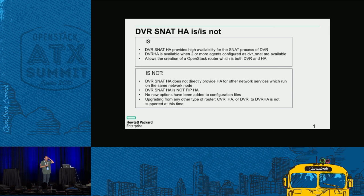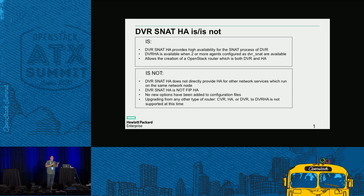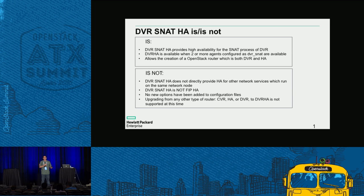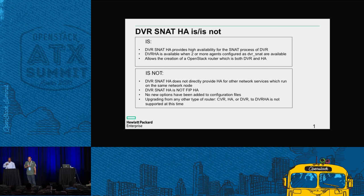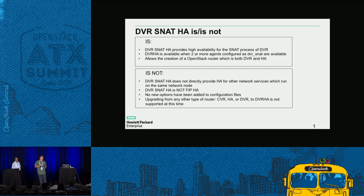DVR SNAT-HA does not provide redundancy for other services on the network node such as DHCP, VPN, or LBaaS — those require separate configuration. DVR SNAT-HA is also not FIP HA; floating IP HA is a different feature with different namespaces and different work. No new configuration options have been added — you just set different values for existing options. Upgrading from other router types to DVR SNAT-HA is not currently supported.